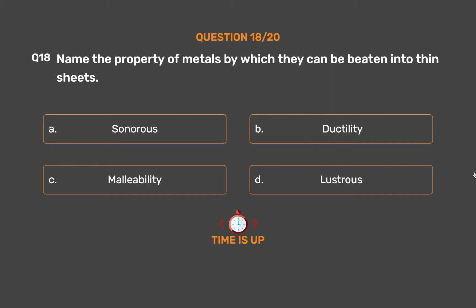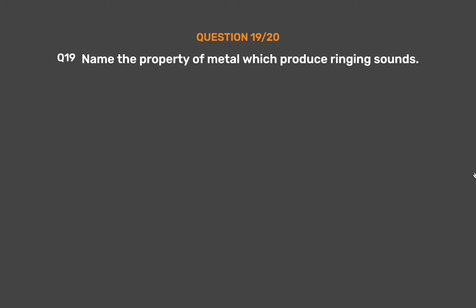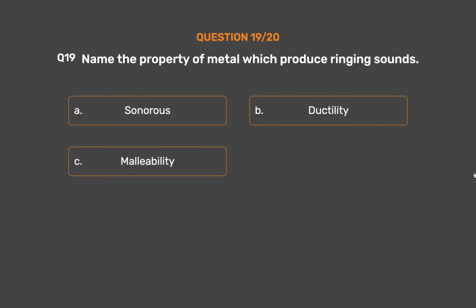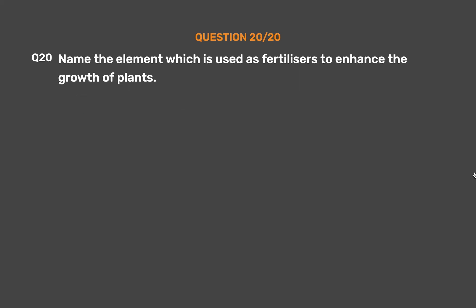The correct answer is Option C: Malleability. A malleable metal is able to be pounded or pressed into various shapes. Question 19. Name the property of metal which produces ringing sounds. Option A: Sonorous. Option B: Ductility. Option C: Malleability. Option D: Lustrous. The correct answer is Option A: Sonorous. Sonorous is the property of metal which produces ringing sounds.